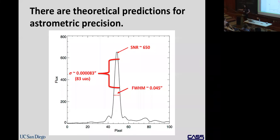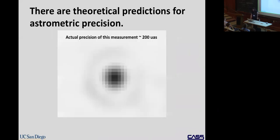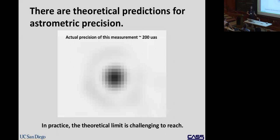The actual precision of this measurement is 200 micro arc seconds — still really good, but a factor of four worse than the theoretical limit. In practice it's really challenging to get to the level where you're just dominated by FWHM and signal-to-noise. There are significant other sources of systematic error.